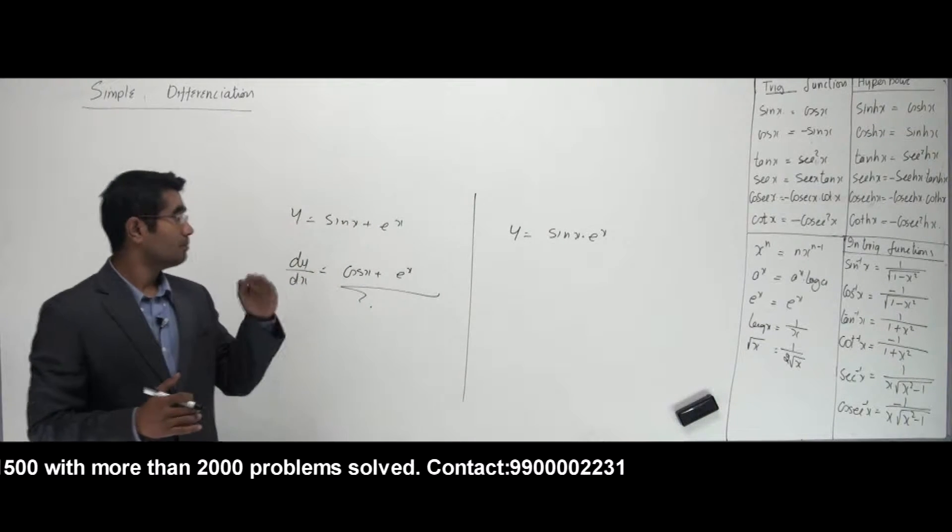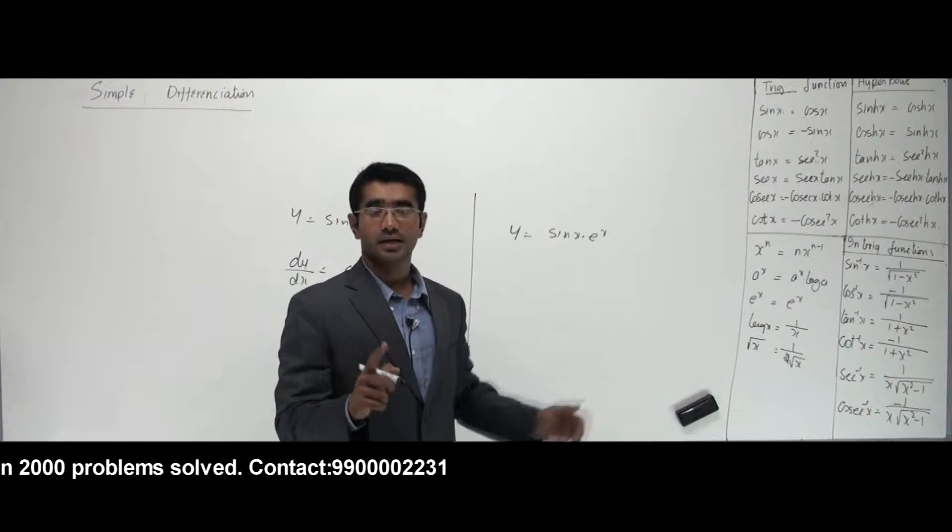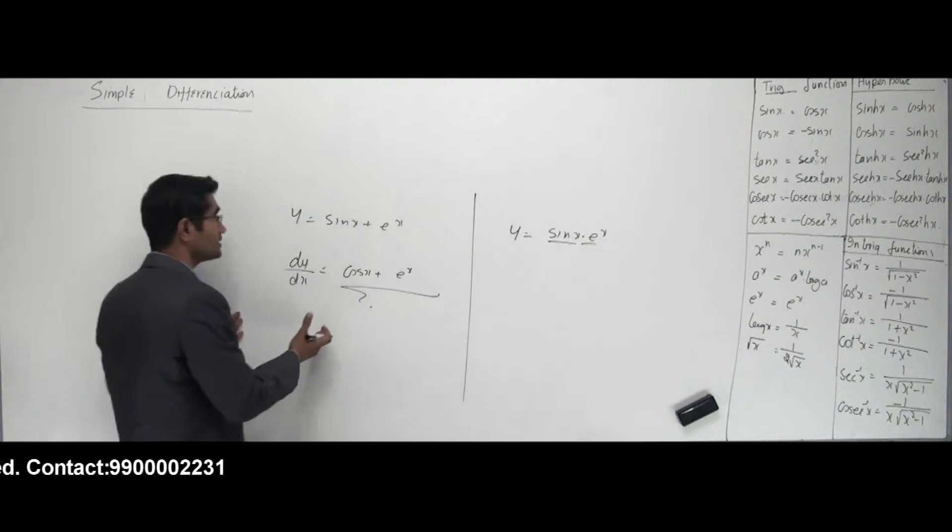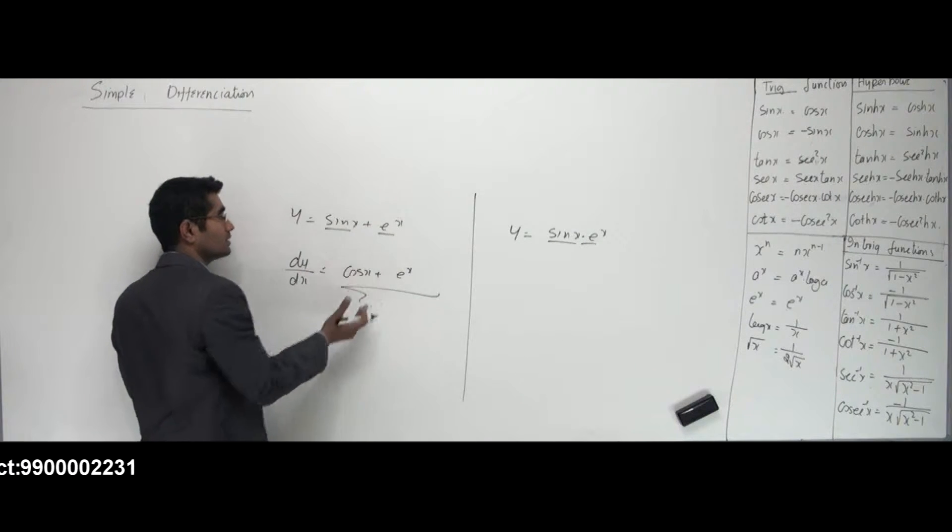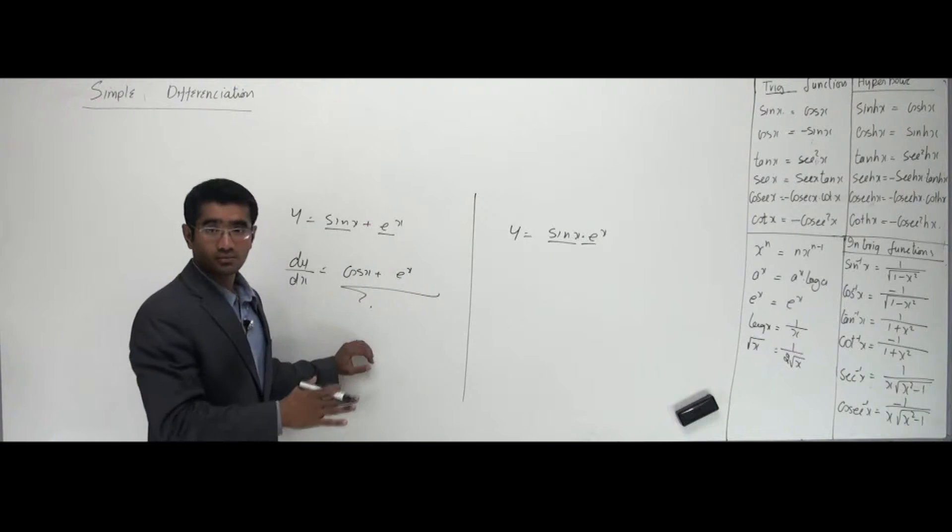Now the rule says I can belt or I can fight with only one person. In this case I can differentiate only one function. Now what if these guys look together? In this case I can see that they're coming one after the other. First sin came, I belted. Then e power x came, we belted. It's done. Very simple.